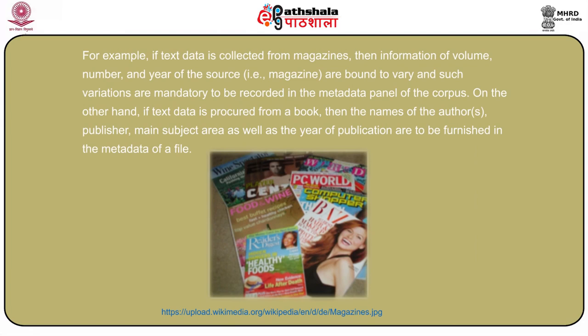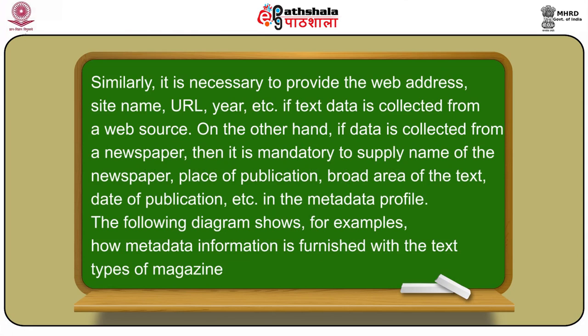For example, if a text is collected from magazines, then information of volume, number and year of the source magazine are required. If the text is procured from a book, then the name of the authors, publishers, main subject area and year of publication are to be furnished. Similarly, if text data is collected from a web source, it is necessary to provide the web address, site name, URL and year of publication. If data is collected from a newspaper, blog or newspaper source, then the name of the newspaper, place of publication, broad area of the text and date of publication must be supplied.